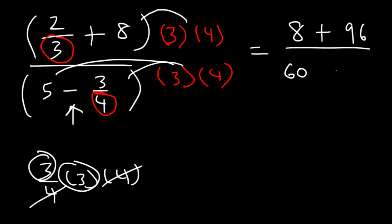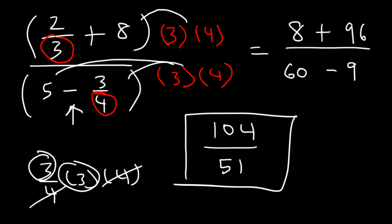Now, 8 plus 96 is equal to 104. 60 minus 9 is 51. So the final answer is 104 divided by 51.